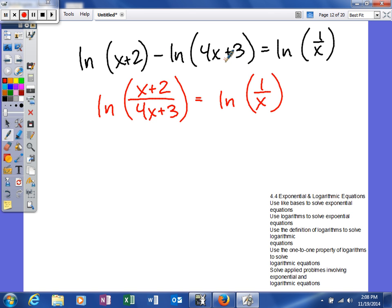So now, we just have one logarithm on each side. So we can actually exponentiate with a base of e to both sides. This will cancel and leave me x plus 2 over 4x plus 3 equals, this will cancel, 1 over x.